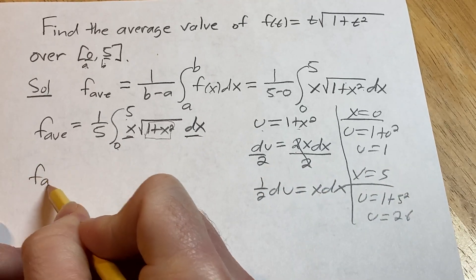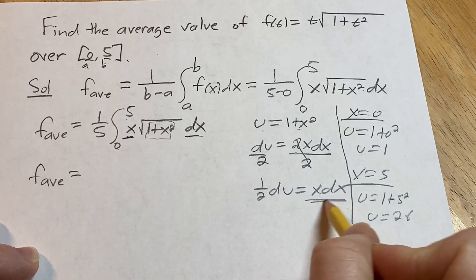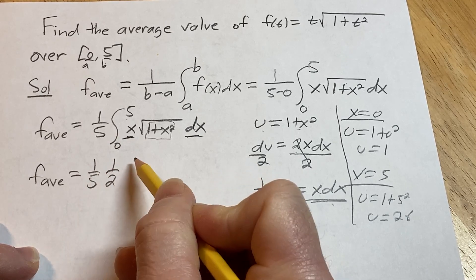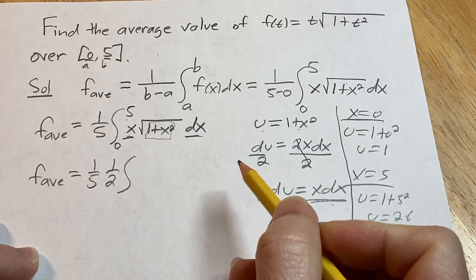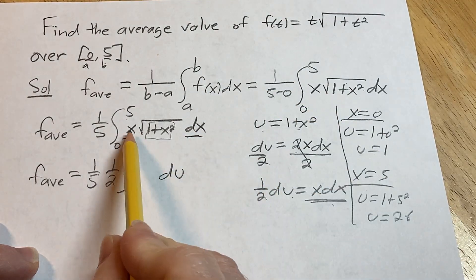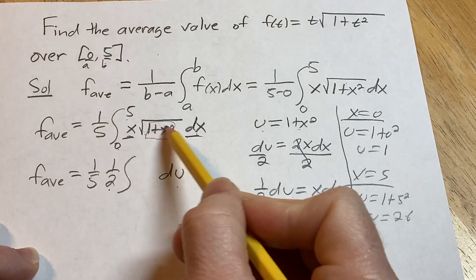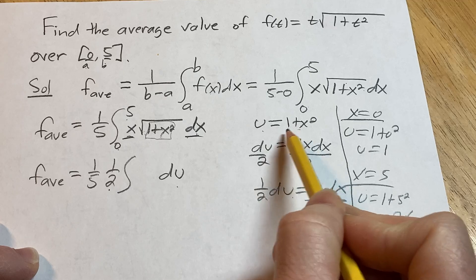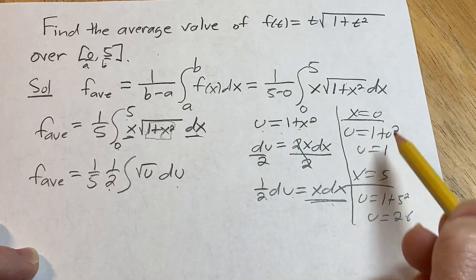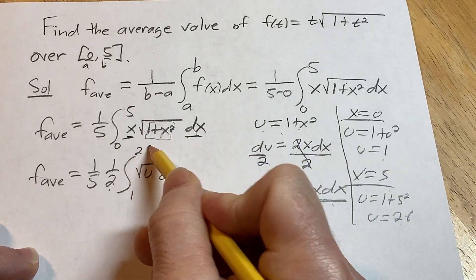we have the average value of a function is equal to. Let's see. So x dx, we said that was 1 half du, so I'm going to go ahead and pull out that 1 half. It's usually good practice to pull out constants. So far, the only thing that's been replaced is the x and the dx, and that's with 1 half and with du. And we're left with the square root of this, but this inside piece is u. So this is the square root of u. When x is 0, we said u was 1. When x is 5, we said u was 26. Boom.